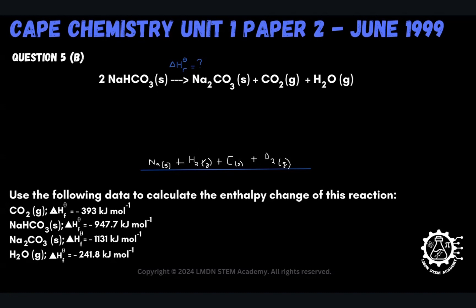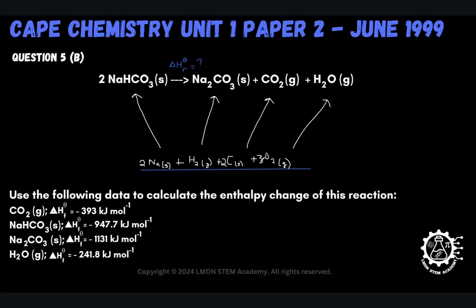Now we need to balance these elemental species. Looking at the left-hand side, there are two sodium atoms because there are two moles of NaHCO₃, so we put a 2 before Na. There are two hydrogens, already captured by H₂. There are two carbons, so we put a 2 before carbon. And there are six oxygens, so we put a 3 before O₂. This represents the standard enthalpy change of formation for each species, shown in equation format.